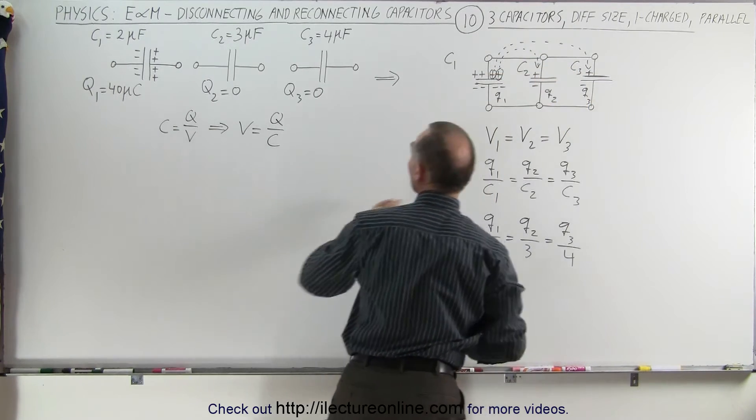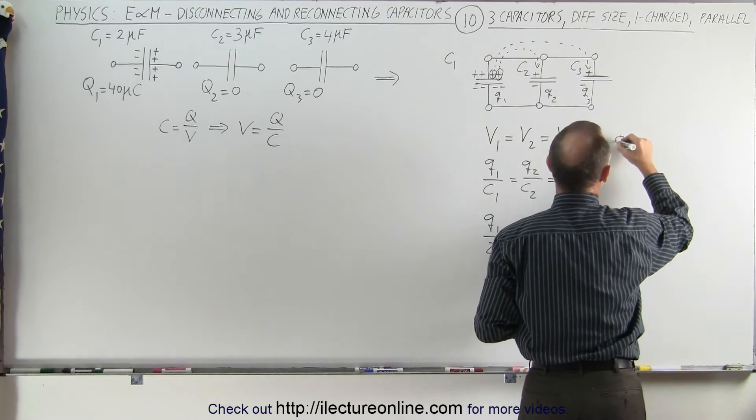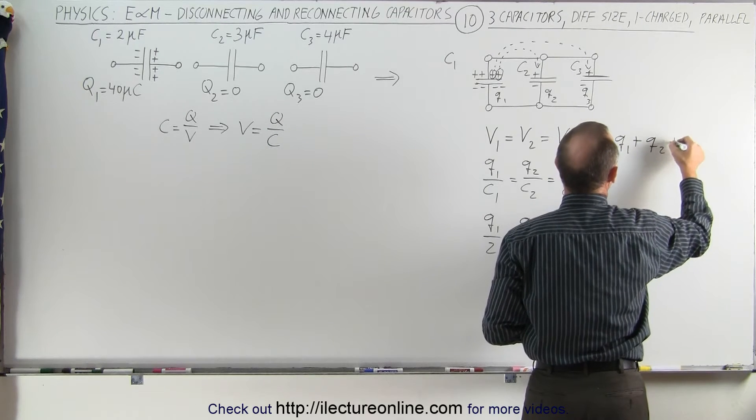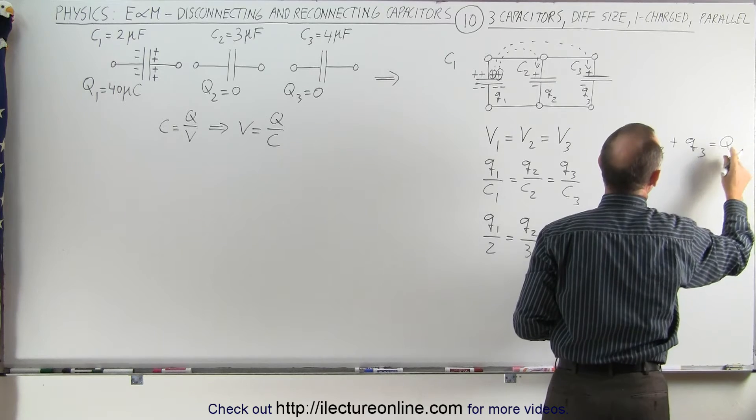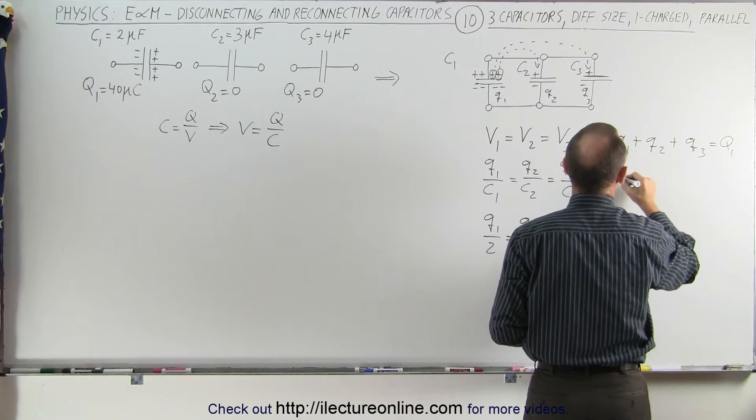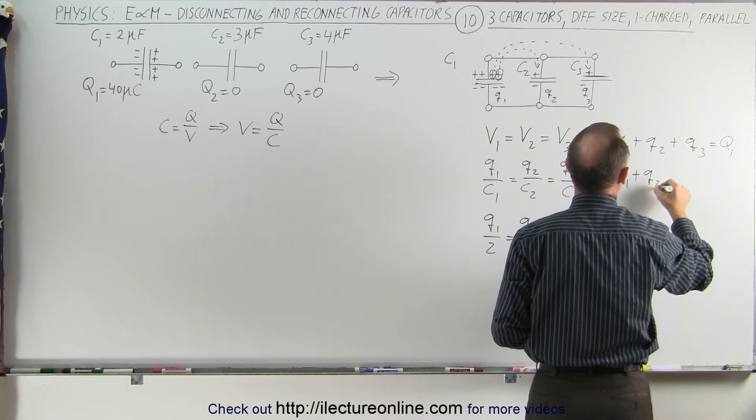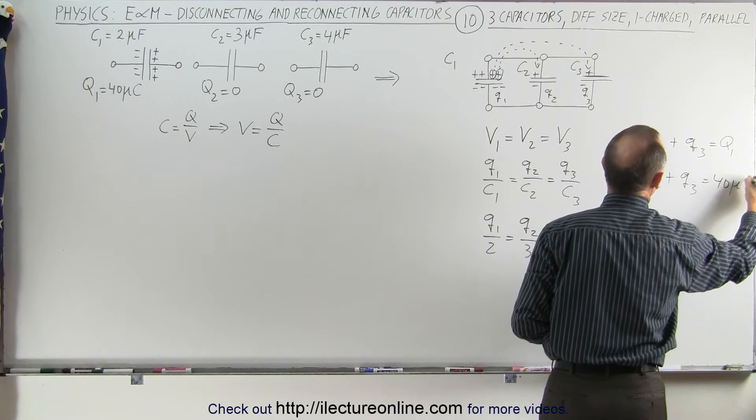Therefore q1 plus q2 plus q3 must equal large Q1 which is the original charge we had, so q1 plus q2 plus q3 must equal 40 microcoulombs.